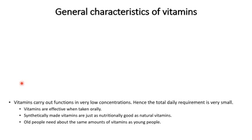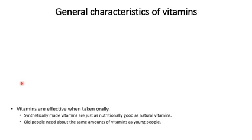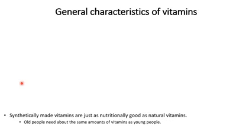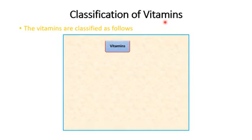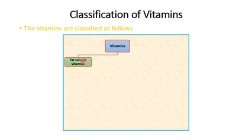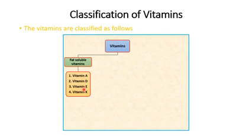Hence, the total daily requirement of vitamins is very small. Vitamins are effective when taken orally, and synthetically made vitamins are just as nutritionally good as natural vitamins — there is no difference. Old people also need vitamins just as young people do. Now we are going to talk about the classification of vitamins. There are two types: water-soluble vitamins and fat-soluble vitamins. Fat-soluble vitamins dissolve in non-polar solvents and do not dissolve in water.